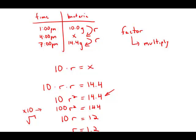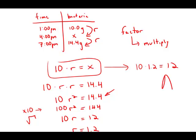Now, this is not the answer. This is the ratio. So now we want to go back to x. Go back to this equation here. 10 times r, which is 1.2, equals 12. And this is answer choice A.